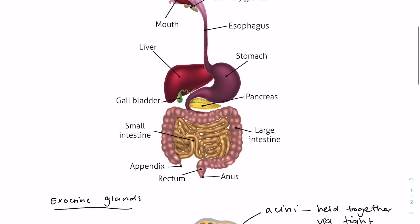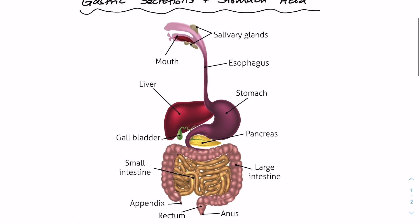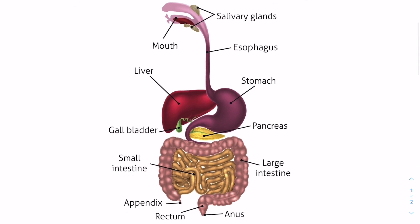The different types of digestive glands we need to know — there are four of them. Firstly, we have the salivary glands, and these secrete saliva in the mouth, which contains amylase. Amylase breaks down starch into glucose, which serves as an immediate source of energy. So if we're really low on energy or glucose, eating a piece of candy or chocolate will automatically give us a lot of glucose through the salivary glands.